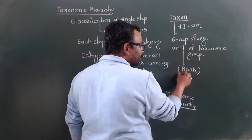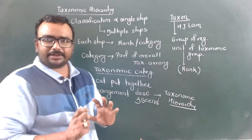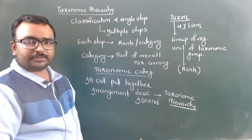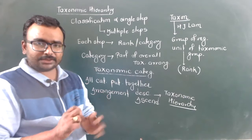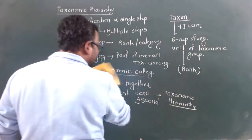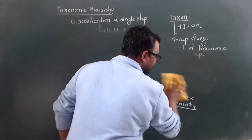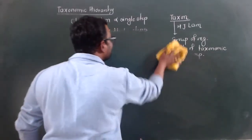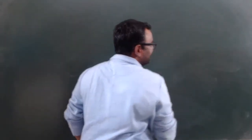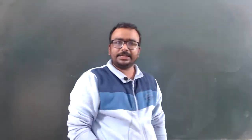If you have a particular rank, you have a taxonomic group, and if you have a taxonomic group, you have a taxonomic unit. This is called taxonomic classification. Classification is a systematic process — as established by Carolus Linnaeus — where each organism is assigned a category.